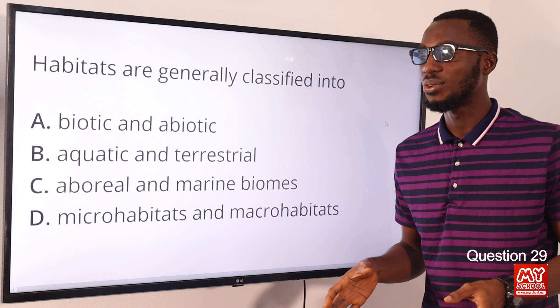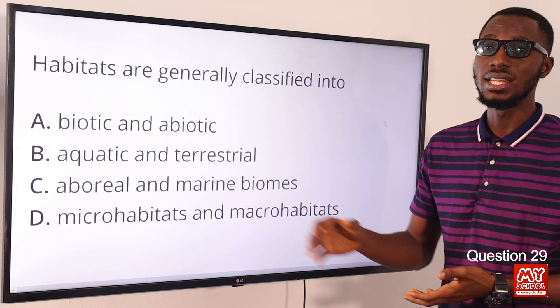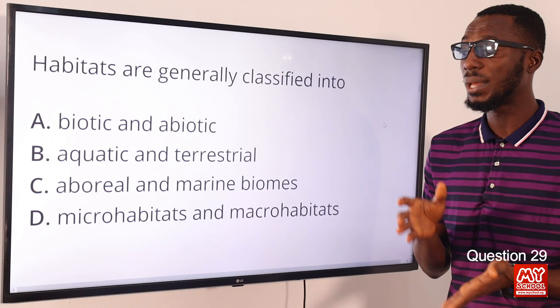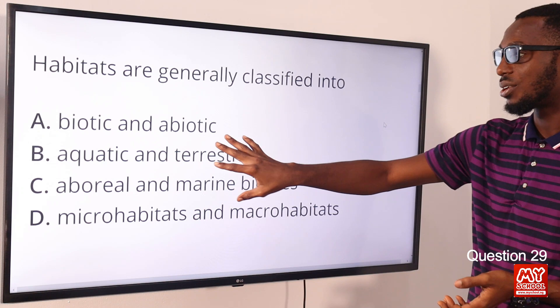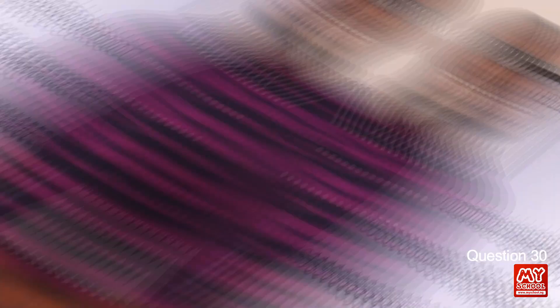Question 29: Habitats are generally classified into aquatic and terrestrial habitats. Biotic refers to the living component and abiotic refers to the non-living component of an ecosystem. Biomes are large natural terrestrial ecosystems described by vegetation. Arboreal refers to trees and is attached to terrestrial habitat. The correct option is option B for aquatic and terrestrial habitat.